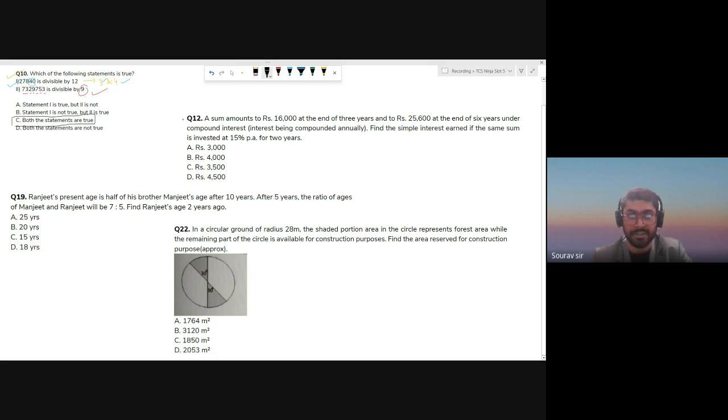Question 12 now. A sum amounts to 16,000 at the end of three years and 25,600 at the end of six years under compound interest. Let's write the first equation: P into 1 plus r by 100 after three years becomes 16,000, and then P into 1 plus r by 100 after six years becomes 25,600.